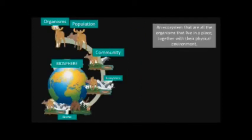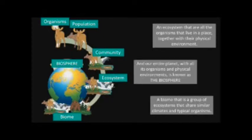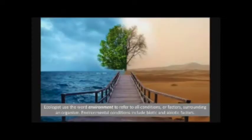An ecosystem includes all the organisms that live in a place together with their physical environment. A biome is a group of ecosystems that share similar climates and typical organisms. And our entire planet, with all the organisms and physical environment, is known as the biosphere.